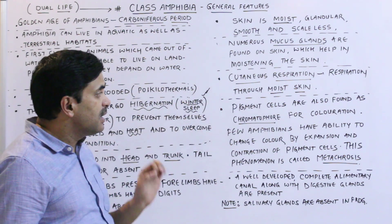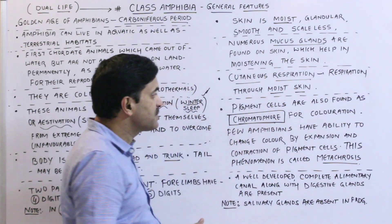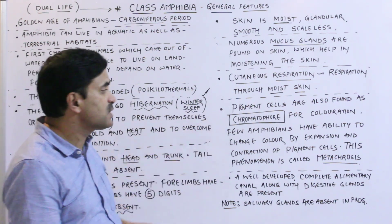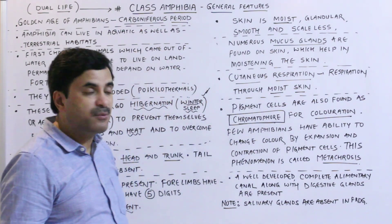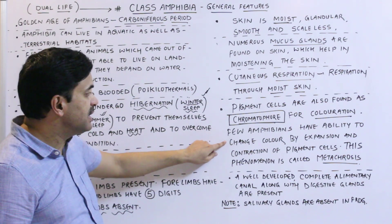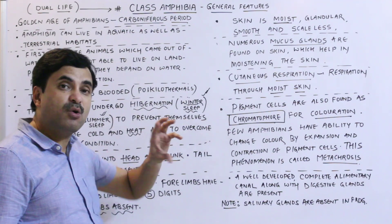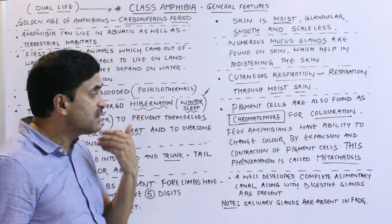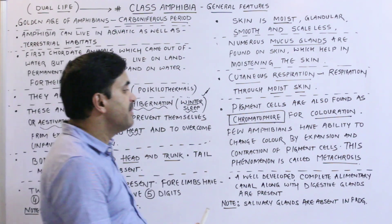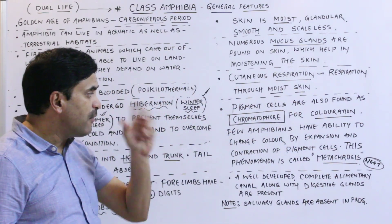Pigment cells are also found as chromatophores for coloration. Some amphibians have the ability to change color by the expansion and contraction of pigment cells. This property of color changing in amphibians is called metachrosis — a very important term frequently asked in exams.